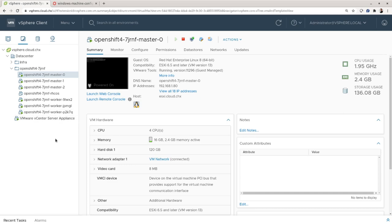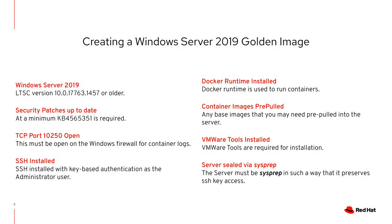To install the Windows VM, you first must create a Windows node golden image. Creating a Windows Server 2019 golden image is beyond the scope of this video, but I'm going to go over some of the prerequisites that must be in place for the Windows Machine Config Operator to run properly. First, you need a version of Windows Server 2019 that the Windows Machine Config Operator supports, with security patches up to date — at a minimum, you need KB4565351 installed.